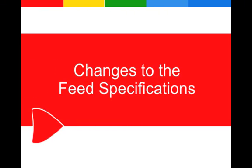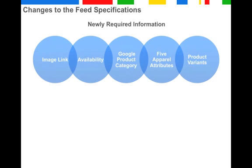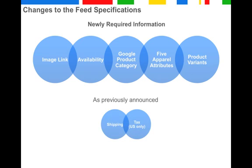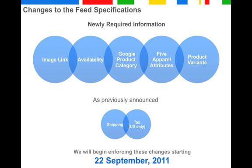So what's actually changing? We have 5 new attributes plus some more sub-attributes that will be required. These are product images, specifying product availability, the new Google product category, 5 new apparel attributes, and product variants. As previously announced, shipping and tax will also become required. We will begin enforcing these changes starting September 22nd. Now let's review these newly required attributes.